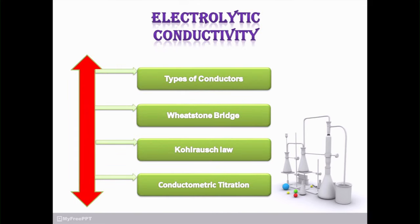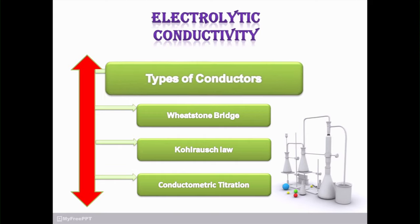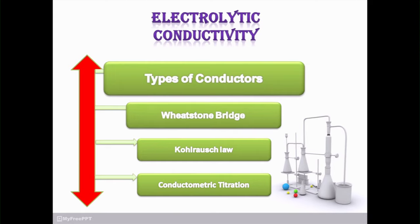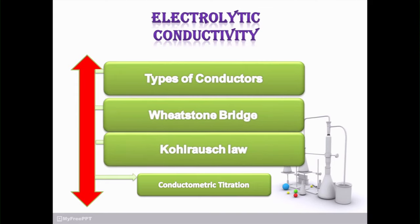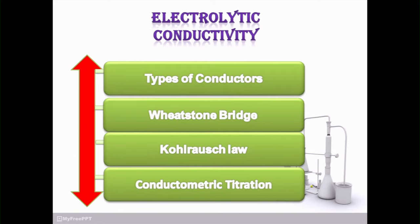In that particular chapter, we have to deal with the conductor, some definition of insulator, definition of semiconductor. First subheading in electrolytic conductivity: type of conductors. Second is Wheatstone bridge, third number Kohlrausch's law, and then conductometric titration. It is unit number 1.